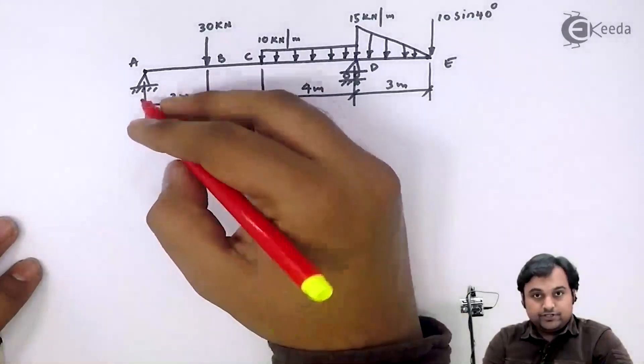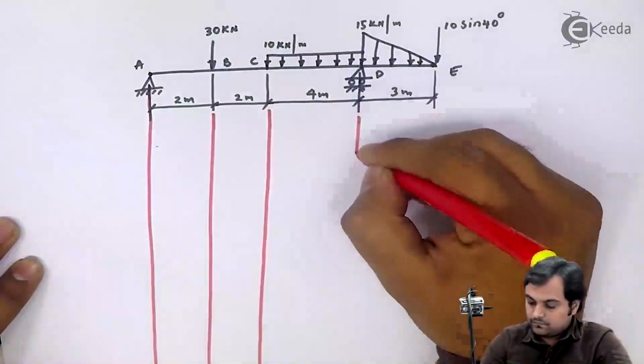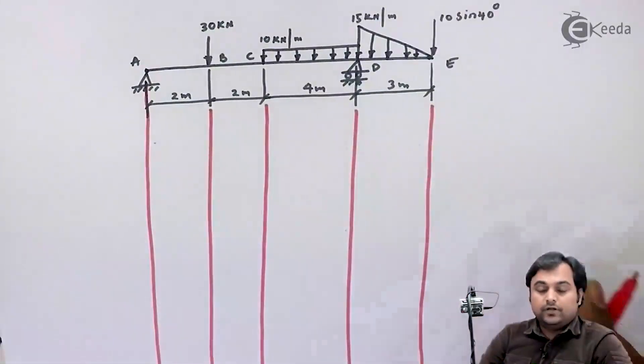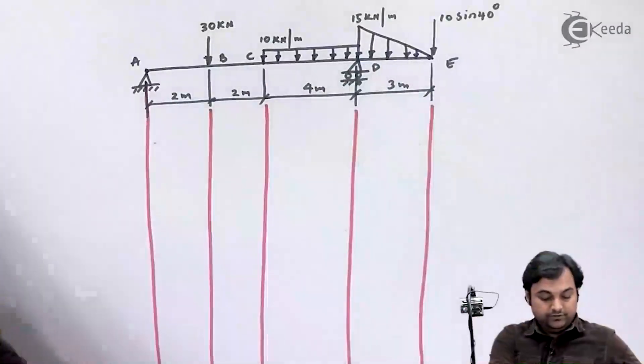I will be projecting the point downwards. Now the length of shear force diagram should be equal to the length of the beam.